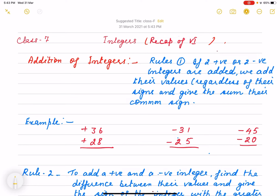Hello children, today we're recapping integers and what we've done in class. We learned how to add integers. Integers, you know, include positive numbers, negative numbers, and zero. So if there are two positive or two negative integers to be added, how do we add them?